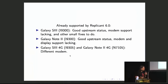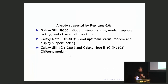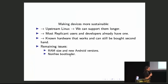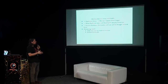We already support the Galaxy S3 and Note 2, and there are similar devices like the Galaxy S3 4G and Note 2 4G — mostly the same but with a different modem protocol. These have good upstream status. For the S3, the modem is not upstream in Linux yet, so some work is needed. For the Note 2, the display driver is lacking upstream. With upstream Linux we can support these devices much longer, since we don't depend on old vendor kernels. It's easier to upstream the code than to forward-port patches.